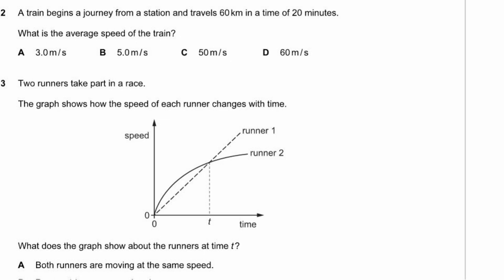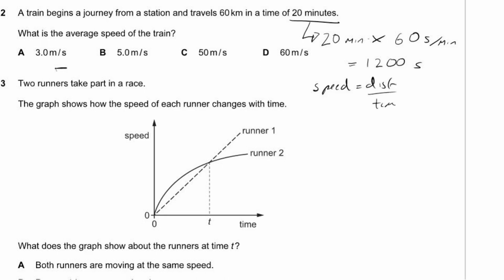Question 2. A train travels 60km in 20 minutes. The answers are in metres per second, so we convert 20 minutes to seconds: 20 × 60 = 1200 seconds. Speed equals distance over time, which is 60km divided by 1200 seconds, giving 50m/s. Option C.